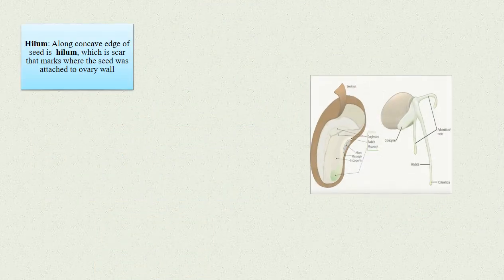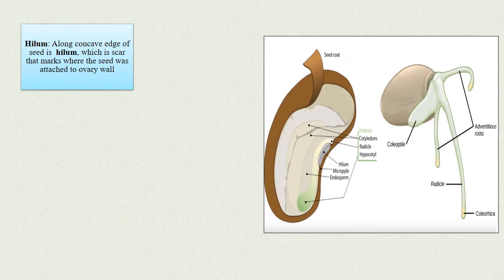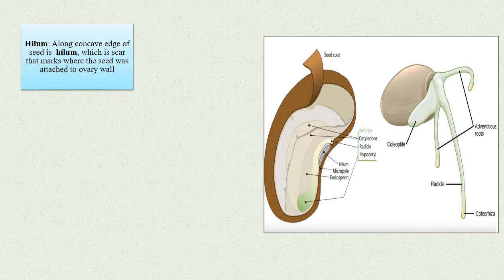Hilum: Along the concave edge of the seed is a hilum, which is a scar that marks where the seed was attached to the ovary wall.